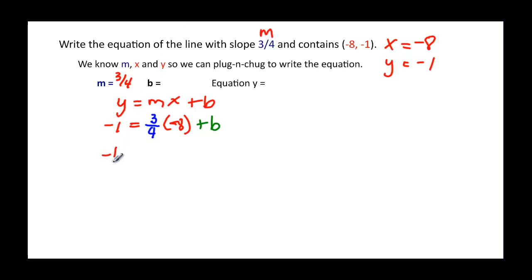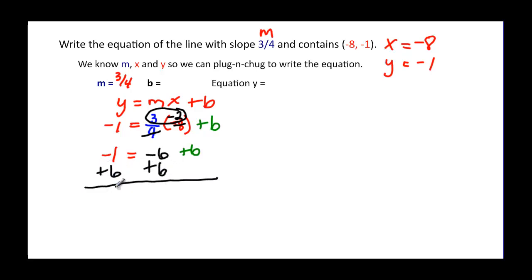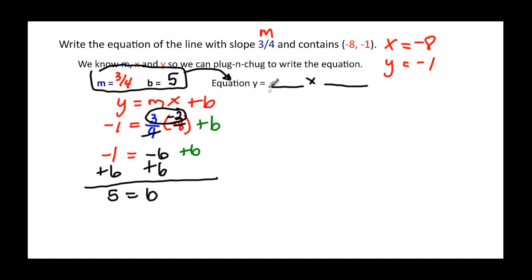y is negative one, slope is three-fourths, and x is negative eight, plus b. Now we take negative eight times three-fourths: four goes into negative eight negative two times, then multiply three times negative two to get negative six, plus b. Adding six to both sides, negative one plus six is five, so b equals five. We write the equation as y equals three-fourths x plus five.